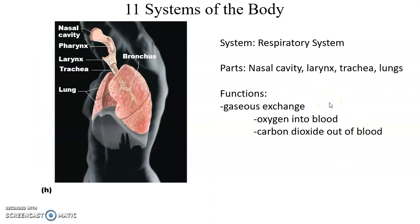The respiratory system includes the nasal cavity, larynx, trachea, lungs, and other structures. Its function is gas exchange: air is brought into the lungs through breathing, oxygen is removed and sent into the bloodstream for cells to use, and carbon dioxide leaves the bloodstream and enters the lungs to be exhaled.